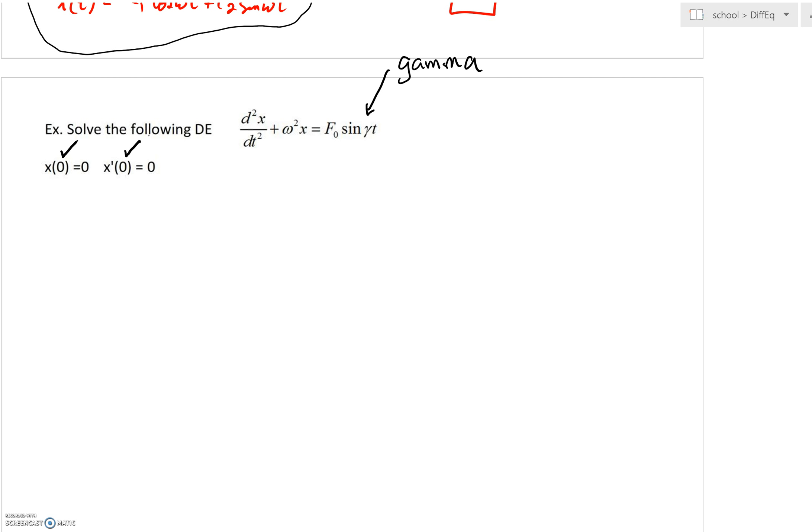We're saying that at t=0, our position is at zero, and we're going to be starting from rest. The derivative of x, the velocity, at time zero is zero.